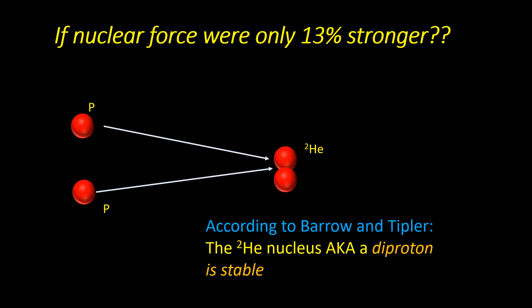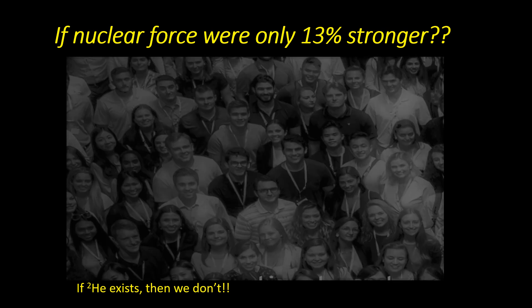If we go the other way and assume the nuclear force is 30% stronger and the electrostatic force the same strength, this means that the diproton, which is a nucleus of two protons, no neutrons, or helium-2, would be stable. In this scenario, shortly after the Big Bang, virtually all the hydrogen in the universe would have been mopped up into helium-2. Deprived of the hydrogen fuel, there'd be no long-lived stars, and as a result, no hydrogen compounds such as water, which are essential for life. To put it simply, if the diproton exists, then we don't.